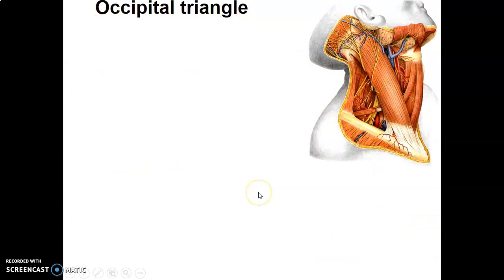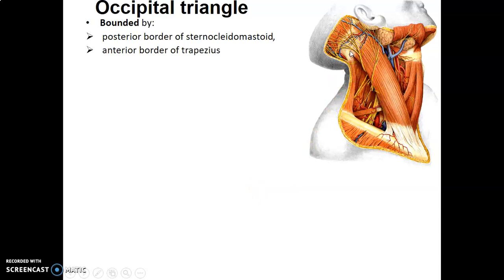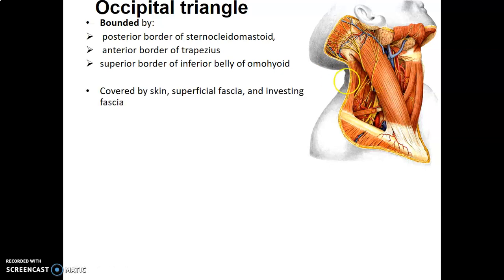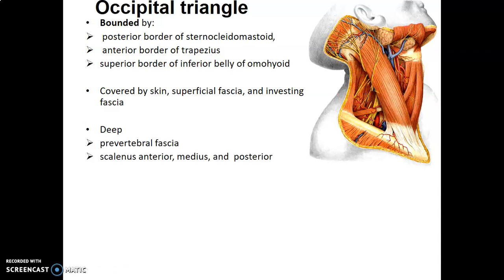The occipital triangle is bordered anteriorly by the posterior border of the sternocleidomastoid, posteriorly by the anterior border of the trapezius, and inferiorly by the superior border of the inferior belly of the omohyoid muscle. The skin, superficial fascia, and investing fascia form the roof. The floor is formed by prevertebral muscles covered by prevertebral fascia, including scalenus anterior, scalenus medius, scalenus posterior, splenius capitis, and part of levator scapulae.